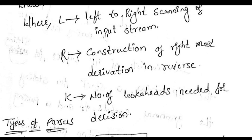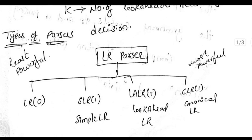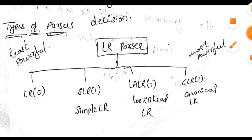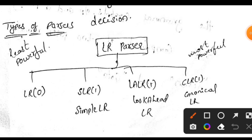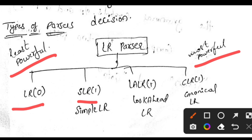There are four types of LR parsers, arranged from least powerful to most powerful: LR(0), SLR(1), LALR(1), and CLR(1).